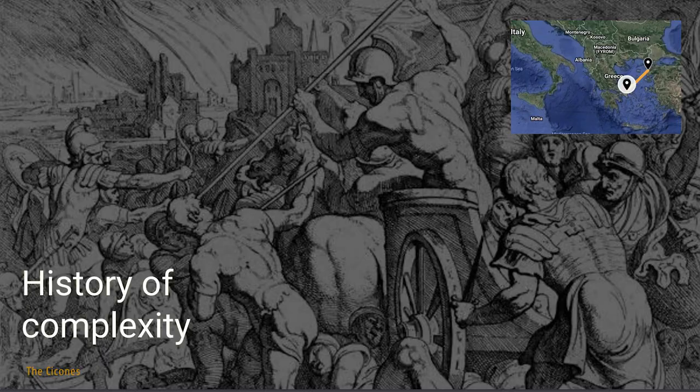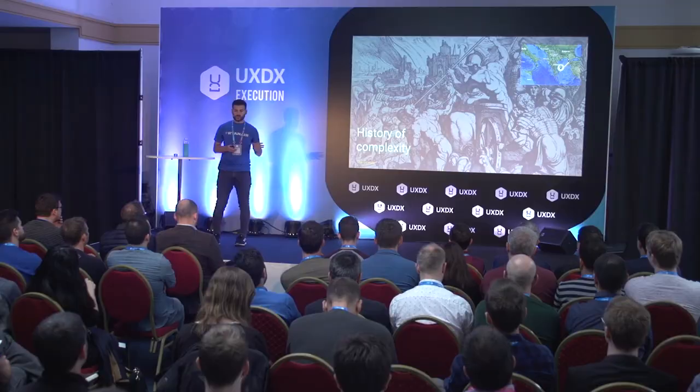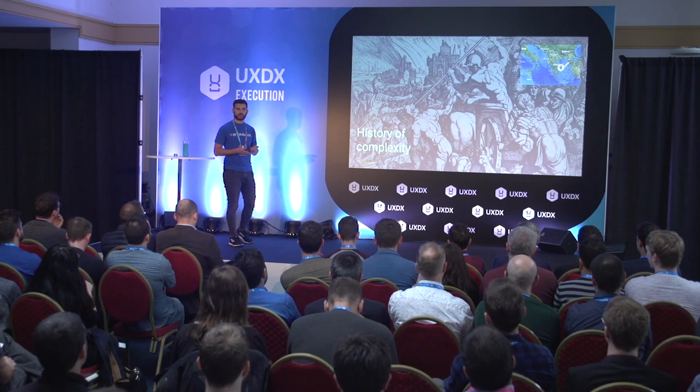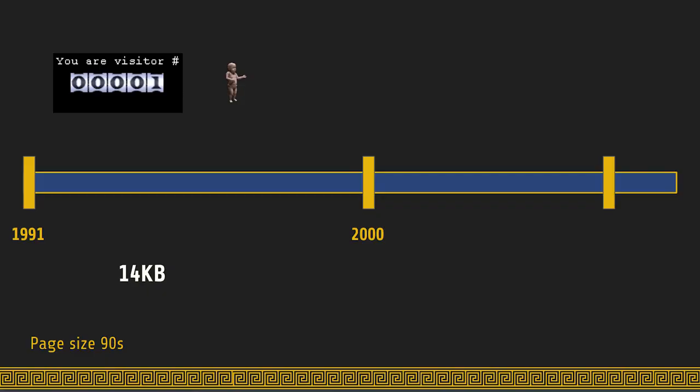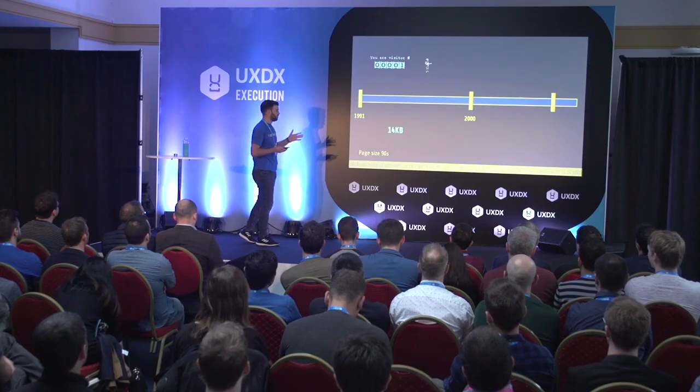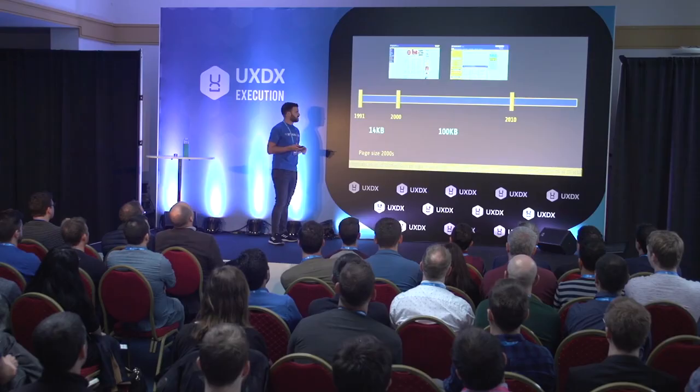After the introduction, we're ready for the first step of our journey — the history of complexity — because I believe it's important to know our past in order to understand the present and predict the future. Web development started in 1991, when the first website came along. Through that decade, from 1991 to 2000, the average page size was 14 kilobytes. We weren't talking much about complexity — the only thing we had was the dancing baby GIF.